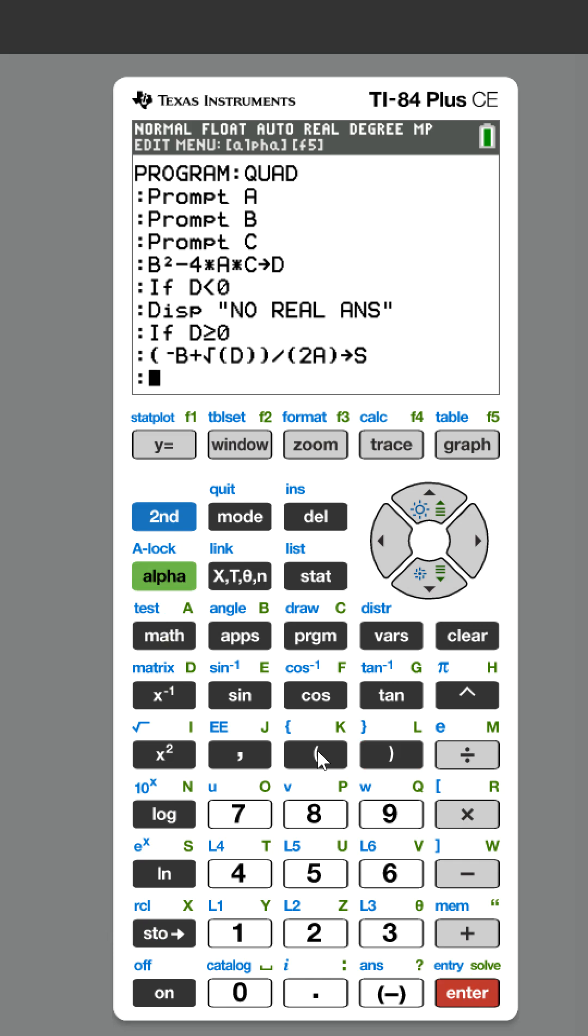Then we do that again for the negative. So it's going to be negative b again, but this time it'll be minus the square root of d divided by 2a. And we're going to store that to t.